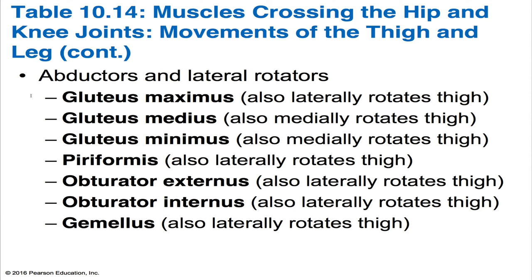Moving on to the posterior muscles: these are abductors, but in addition they're also lateral rotators. The gluteus maximus rotates the thigh laterally. The gluteus medius and gluteus minimus rotate the thigh medially. The piriformis, obturator externus, obturator internus, and gemellus all rotate the thigh laterally.